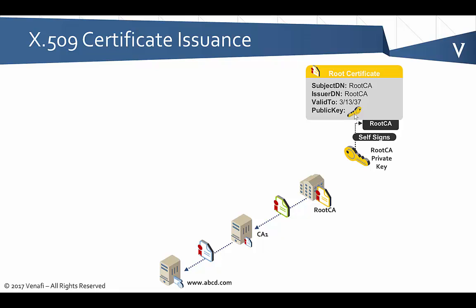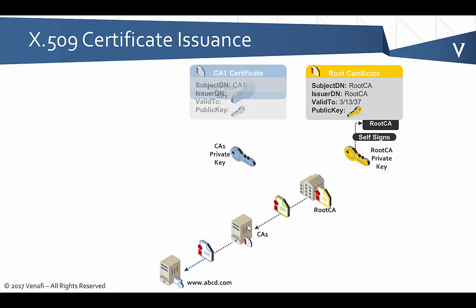Once we have the root CA set up — once we've gone through the process and we have a signing key and a root certificate — then we can start the process of setting up CA1. This may be done as part of the same ceremony in the same bunker, or it may be a completely different organization. But effectively, at CA1, we're going to go through a very similar process. There's this very intricate ceremony: everybody goes into the room, cameras are rolling, potentially guards with guns — all of that. Somebody walks up to the keyboard after they've checked out all the infrastructure and verified there's no malware, and they create a key pair and a certificate signing request, putting in information that this is CA1 requesting a certificate. They take this CSR over to the root CA.